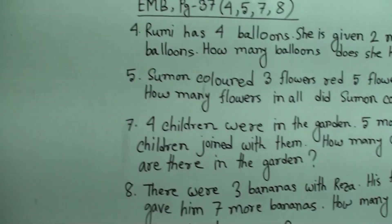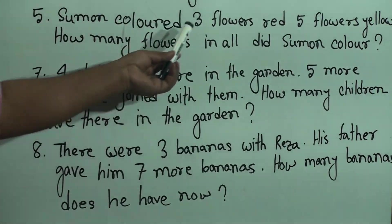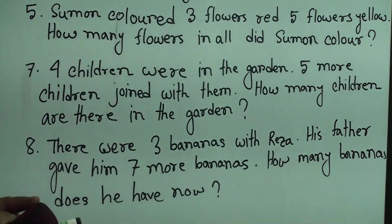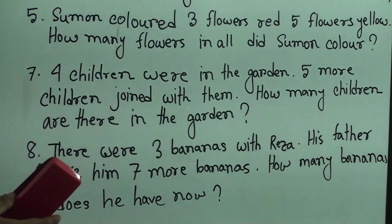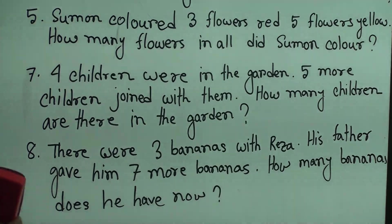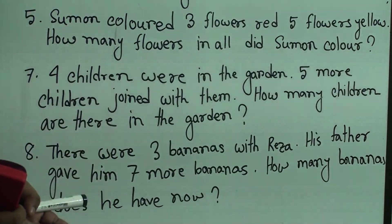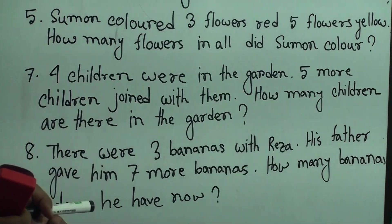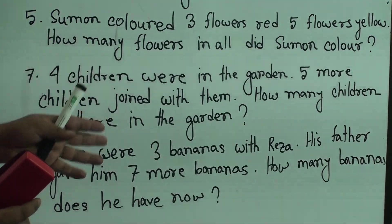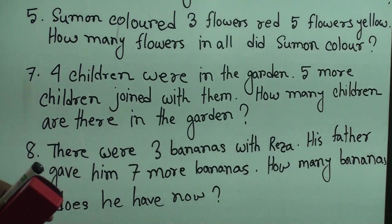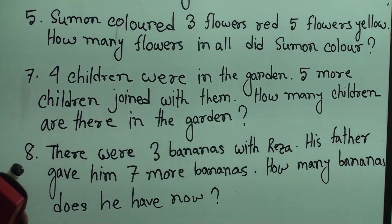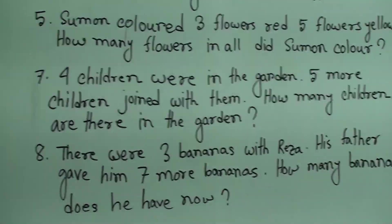We read the question first. Shumon colored 3 flowers red and 5 flowers yellow. How many flowers in all did Shumon color? That means Shumon colored 3 flowers red and 5 flowers yellow, so how many flowers in all did Shumon color? We need to find out the total amount of flowers that Shumon colored, so we do addition and we get the answer.